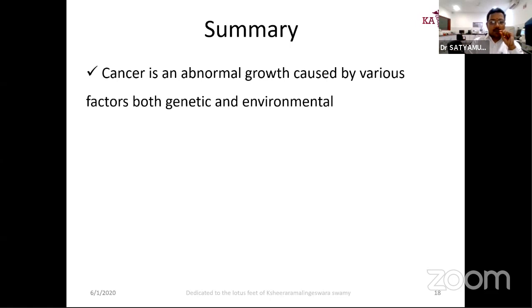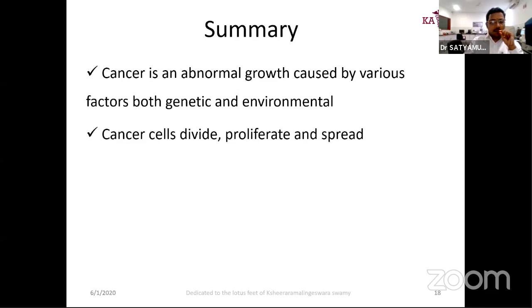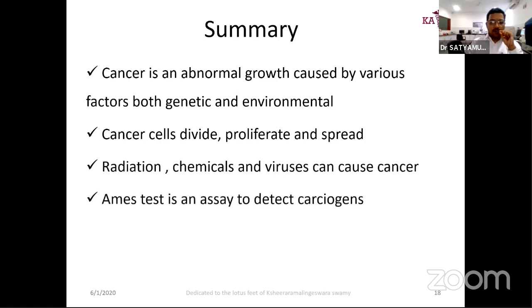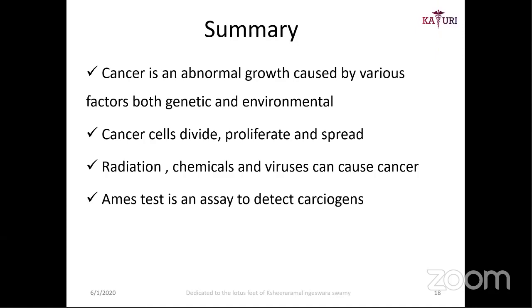Cancer is an abnormal growth caused by various factors, both genetic and environmental. Cancer cells divide, proliferate, and spread at a greater potential than normal cells. Radiation, chemicals, and viruses can cause cancer. The Ames test is an assay to detect carcinogens. That completes the session on cancer and carcinogens. Thank you so much, sir — sir has beautifully explained what is cancer. With this, we are coming to the end of part one. Go back to the homepage, refresh it, and we'll be streaming our part two session in another few minutes. Stay tuned, viewers. Thank you.